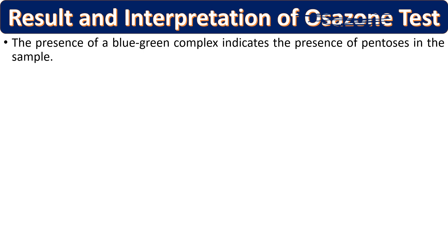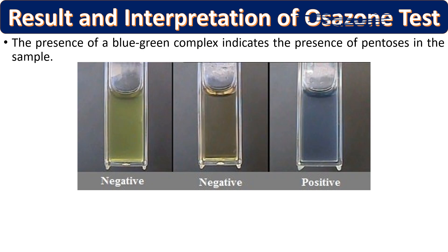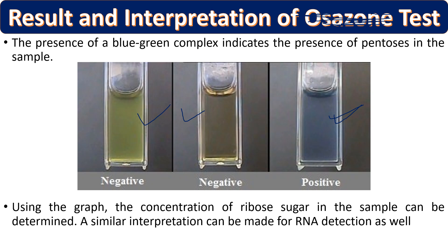To evaluate results: the presence of a blue-green complex indicates the presence of pentose in the test sample. A positive test shows blue-green color; a negative test shows no color change. This is the qualitative result. For quantitative analysis, using the standard graph the concentration of ribose sugar in the sample can be determined. Similarly, RNA quantification can also be done using this method.